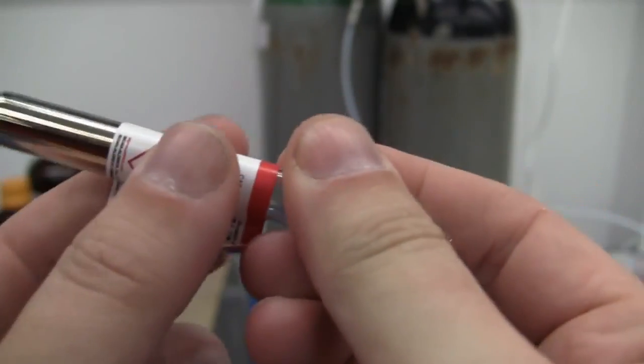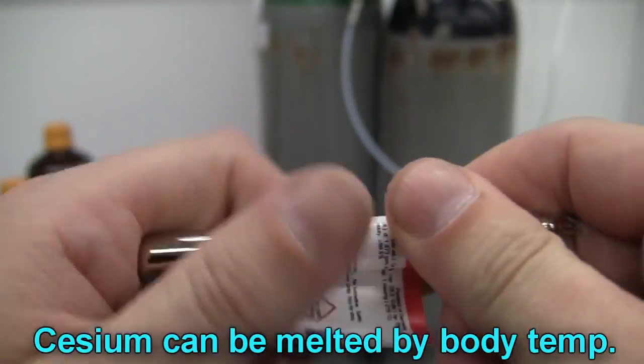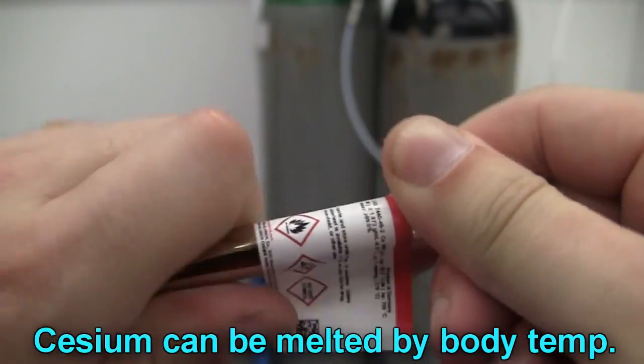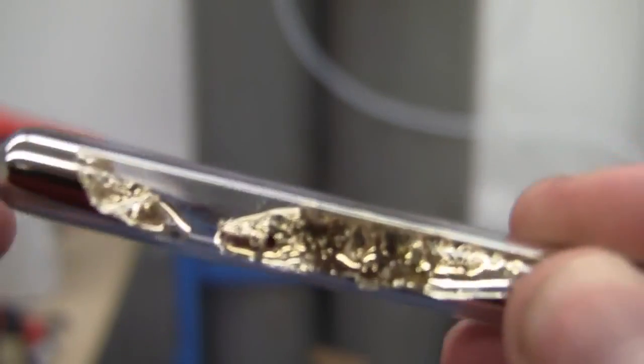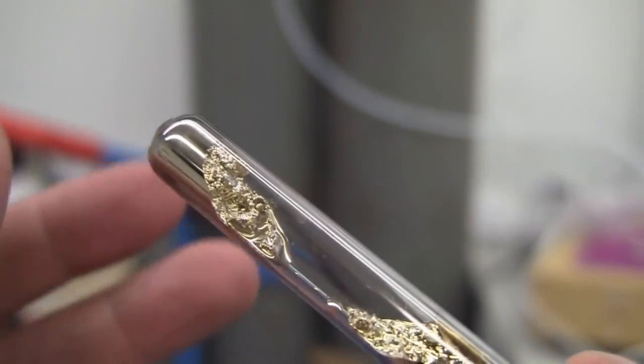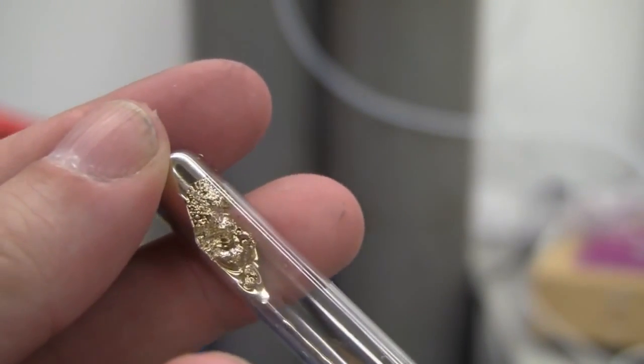So, now we have cesium. As you can see at the moment, it's really quite solid. I'm just going to warm it up with my fingers. Here, I've got it partially melted. I'm just going to melt the rest of that. That's melting anyway. Just like that.